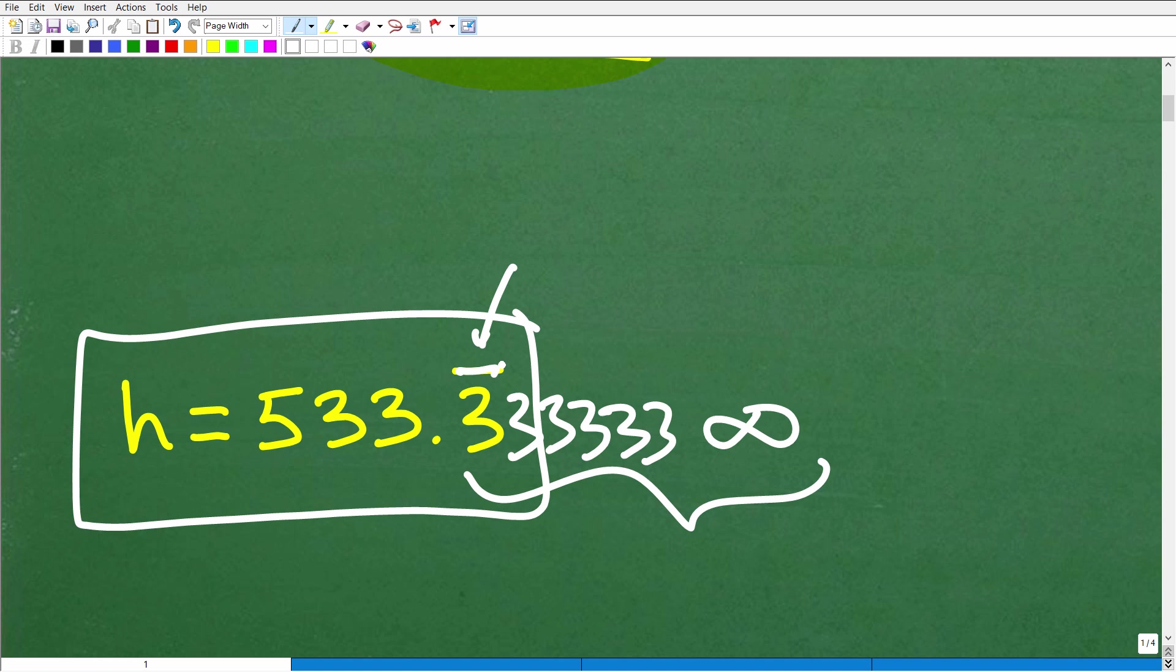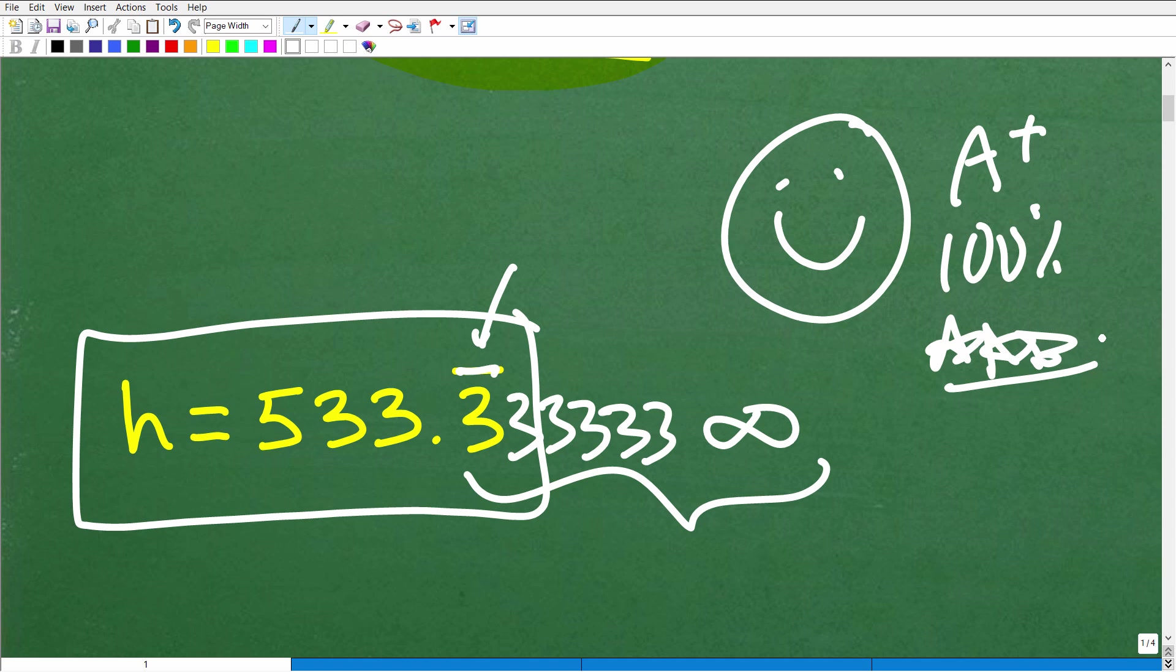Okay, so how'd you do? Well, if you got this right, let's go ahead and give you a nice little happy face, an A plus, a 100%, and a few stars, so you can tell your friends or family that you were able to defeat an algebraic equation that involved percent. They'll be so impressed with that.